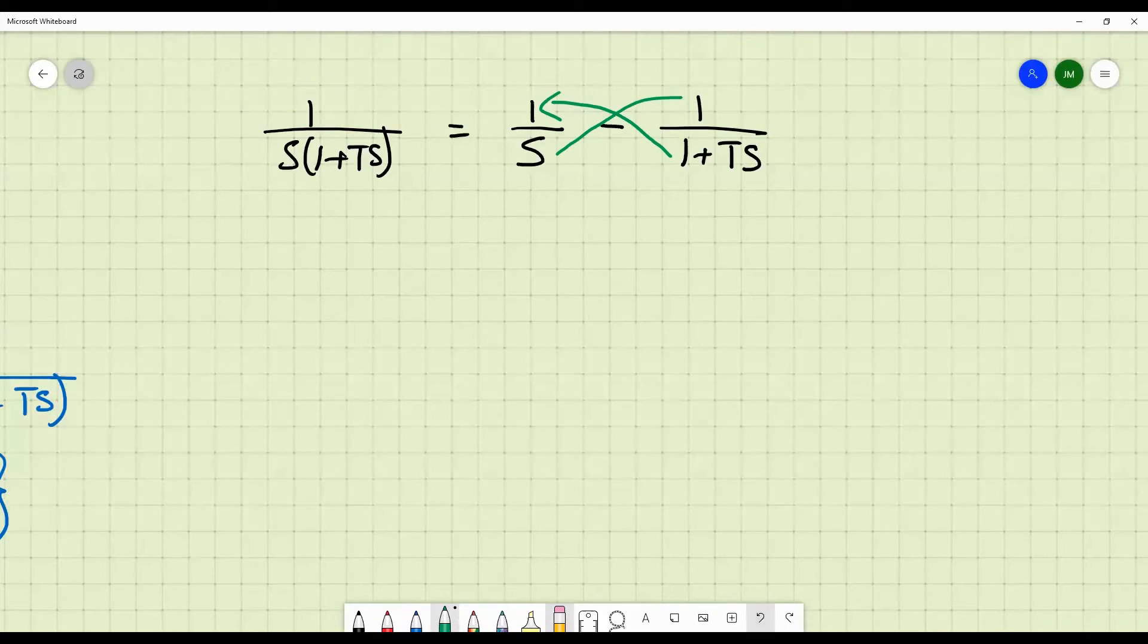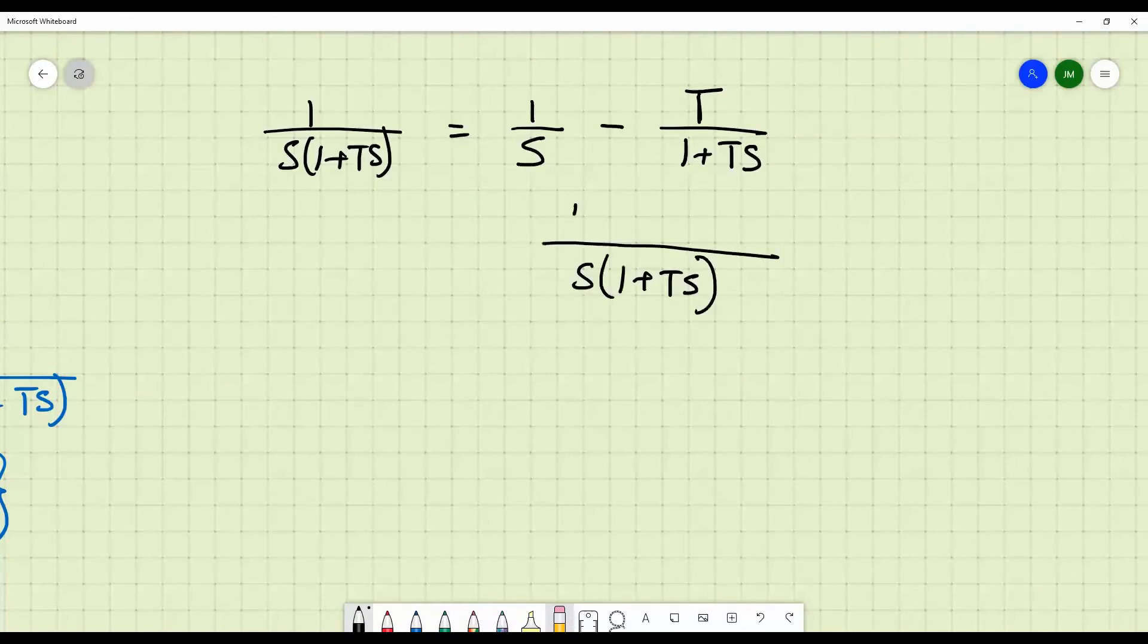However, for the S term to get cancelled off, remember there is a T here. So, 1 plus T S will come over on the numerator on this side. If you want the T S to be cancelled on the right hand side, what you need to do is, you simply add a T here. Let us check if this equal to this. If you take the LCM S into 1 plus T S. So, you get 1 plus T S minus T S. Right, that is equal to 1 by S into 1 plus T S.